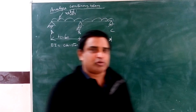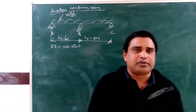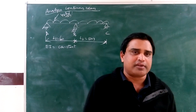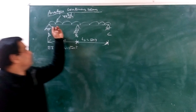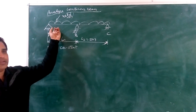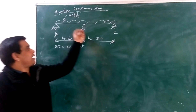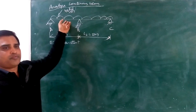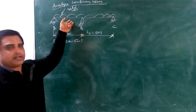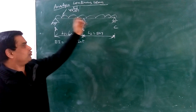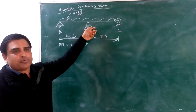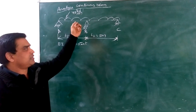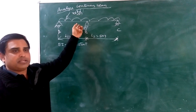Hi guys, today we are going to discuss analysis of continuous beams by using the 3-moment equation. This is a continuous beam having two spans of 6 meters and 8 meters, carrying a UDL of 40 kN per meter from A to C. We have to draw a combined bending moment diagram for this continuous beam using the 3-moment equation.